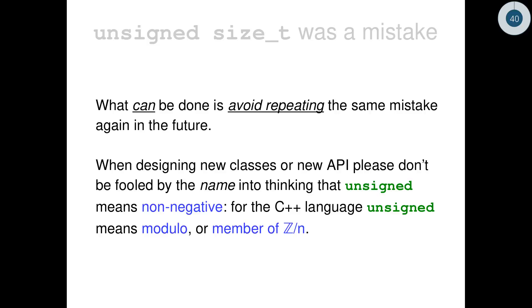What can be done is avoid repeating the same mistake in the future. So in your code, when you design new classes, new API, please don't be fooled by the name into thinking that unsigned means non-negative.